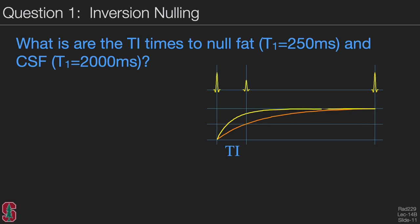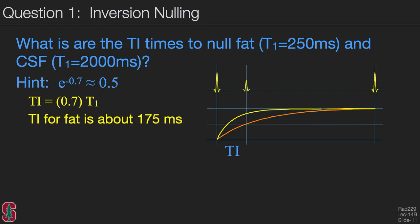For the inversion nulling question: what are the inversion times to null fat, which has a T1 of about 250 milliseconds, and CSF, with a T1 assumed to be 2,000 milliseconds? The hint is that e to the minus 0.7 is approximately 0.5. Basically, we want half of the exponential decay to have happened—at that point the magnetization passes through zero, which is the null point. So TI equals 0.7 times T1. For fat, TI is about 175 milliseconds, and for CSF it's about 1.4 seconds.